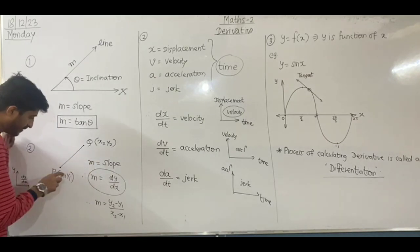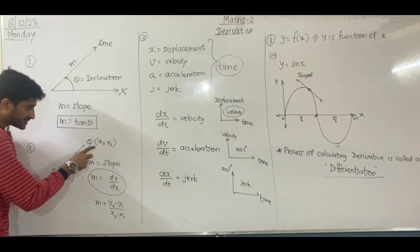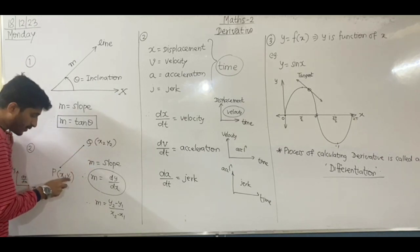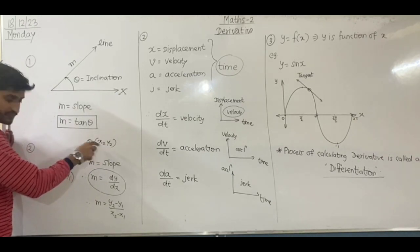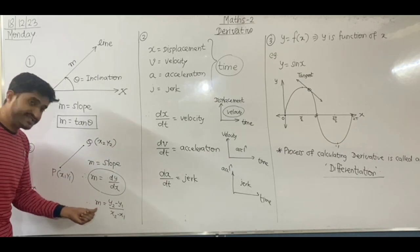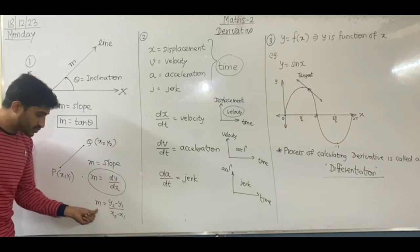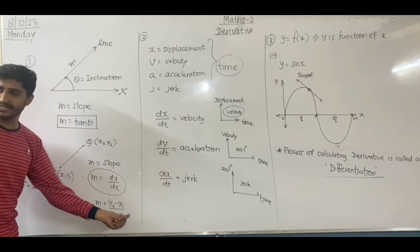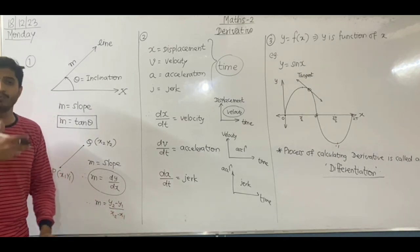With two points on the line, we can calculate the slope. The slope formula is y2 minus y1 upon x2 minus x1.